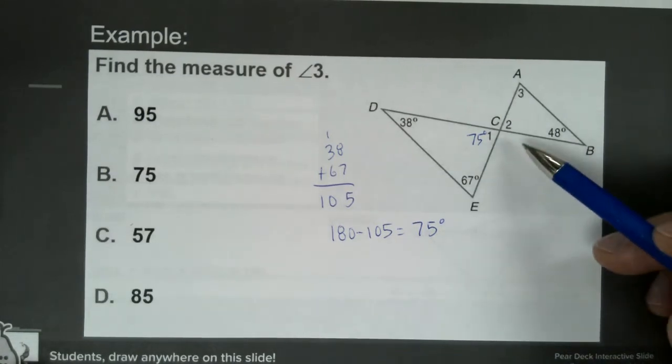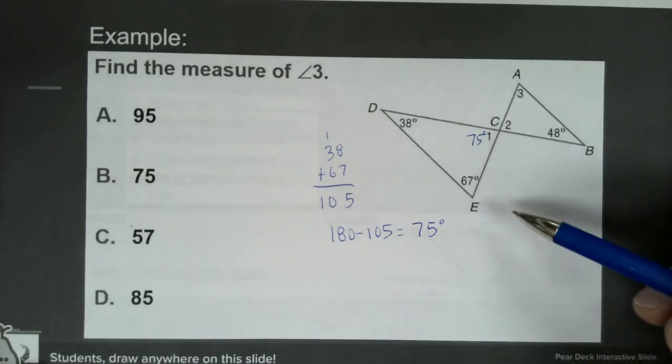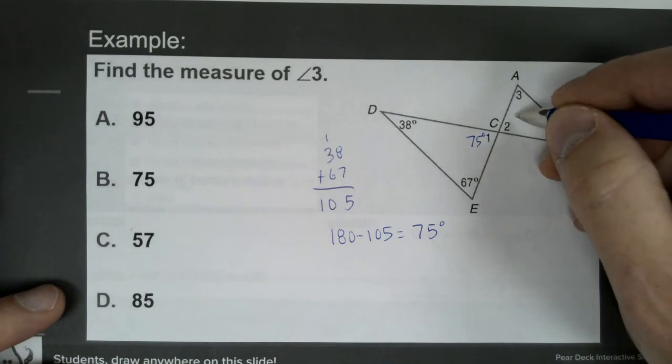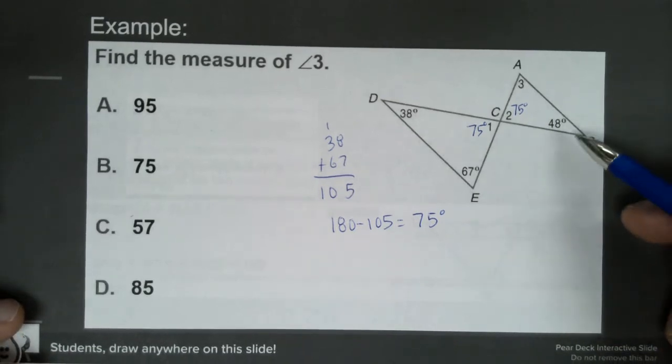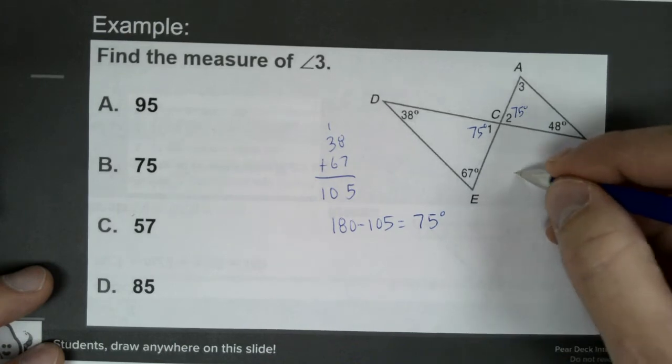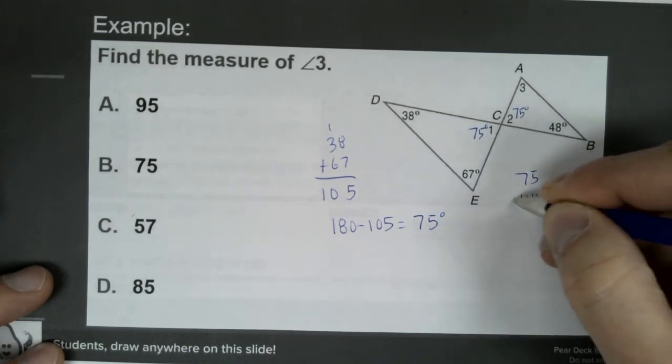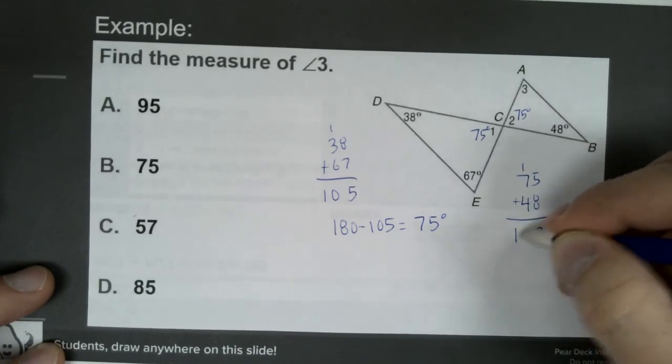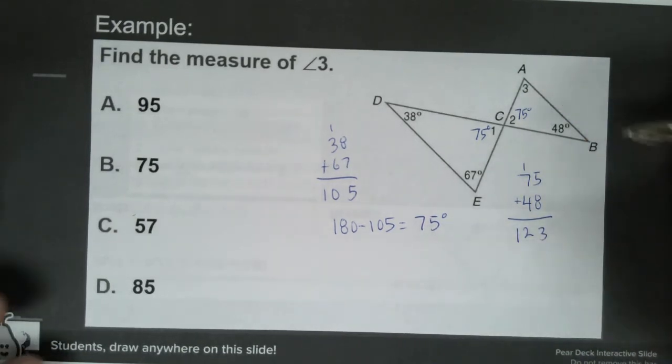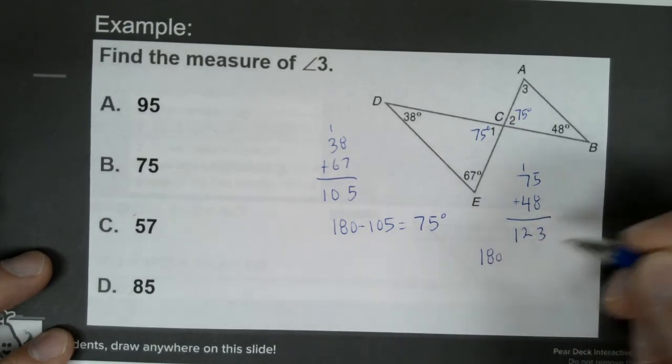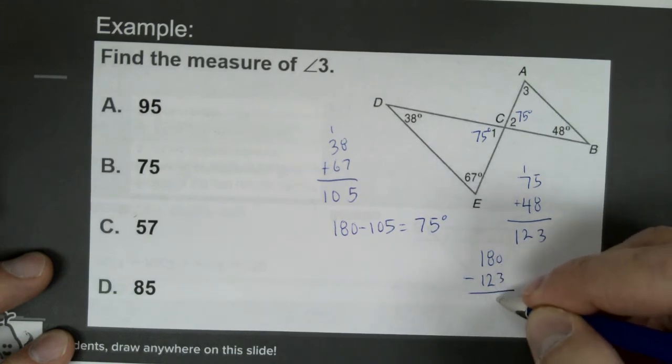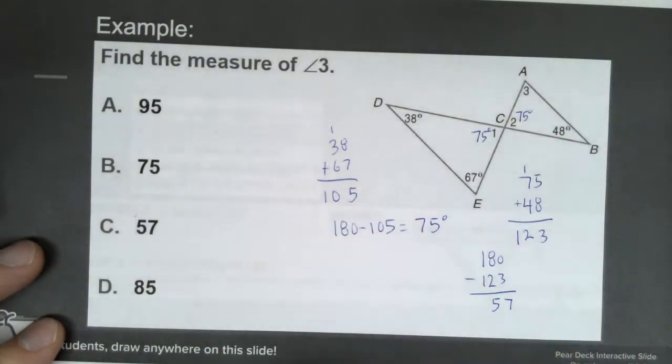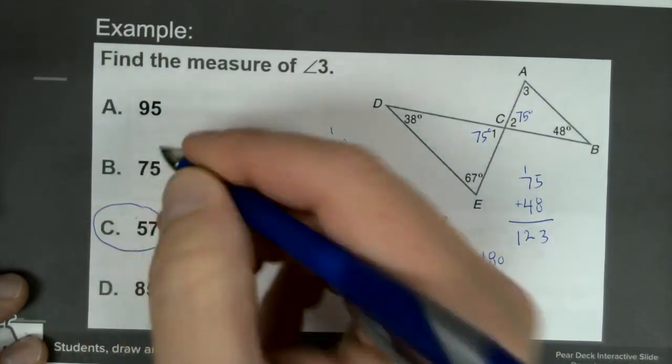Now from some things we've talked about before, we know that one and two are vertical angles. So if one and two are vertical angles, I can say that angle 2 is also 75. And I can go through that same process right now to find angle 3. So if I add 75 and 48, that gives me looks like 123. Well, to find angle 3, I'm going to take 180 minus that 123, and that's going to give me looks like 57. So our best choice on this one would be letter C.